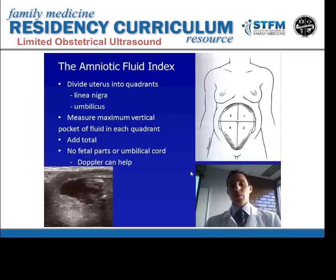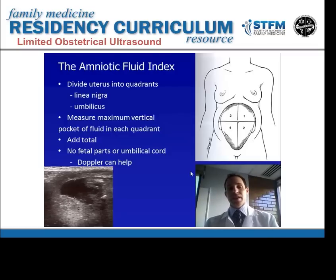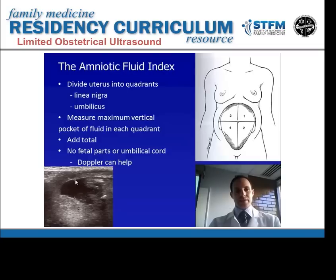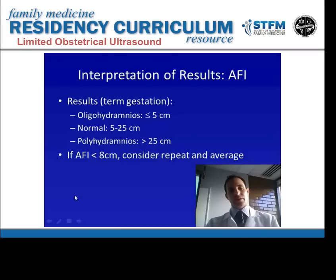You measure the deepest pocket of fluid without any fetal parts or umbilical cord, and add up the total from all four quadrants. On the bottom left you can see a good example — a typical view of what you might see in quadrant three. The calipers are measuring from the anterior to the posterior part of the uterus, with the fundus above, a posterior placenta below, and fetal parts to the side — giving a nice pocket of fluid to measure.